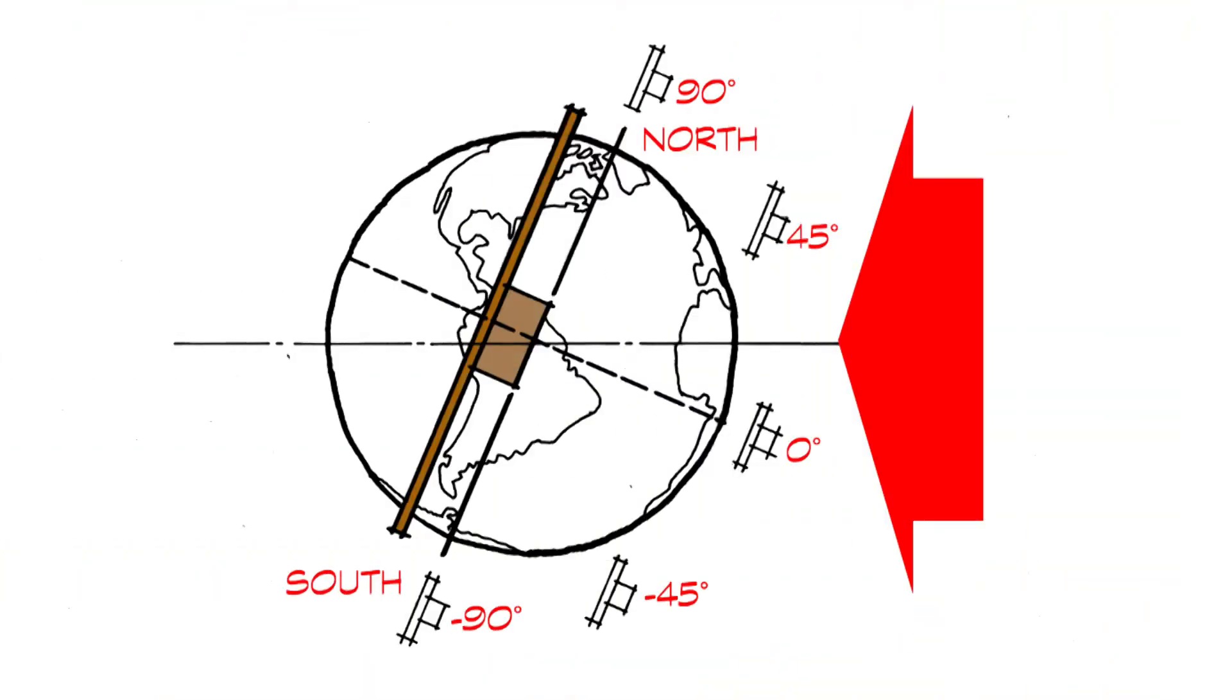This diagram is to reinforce the point that this is a universal dial and that we can use it at any latitude. To do this, the dial plate must stay parallel to the Earth's polar axis. This is done by tipping the plate at an angle equal to the latitude of the location. 90 degrees at the poles, 0 degrees at the equator, and from 0 to 90 in between.